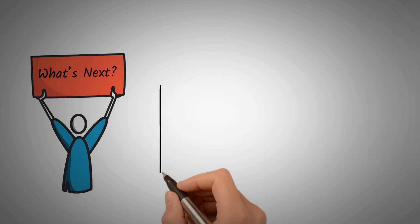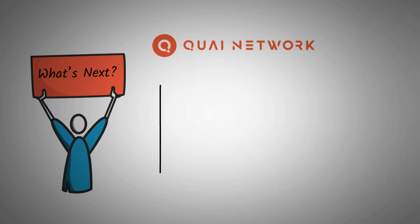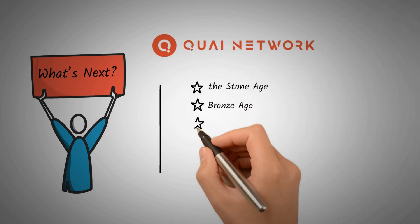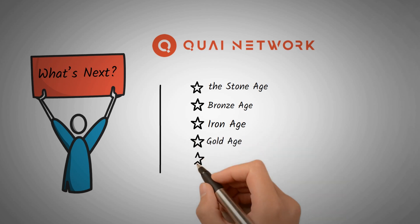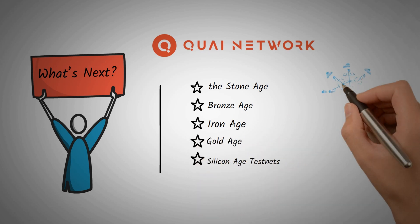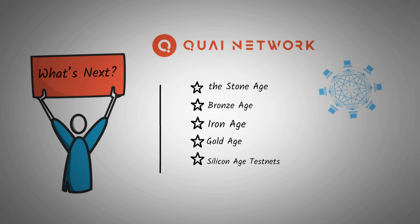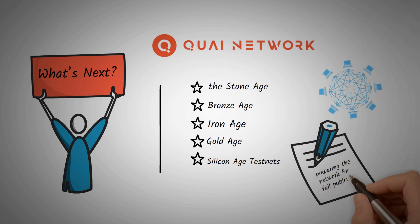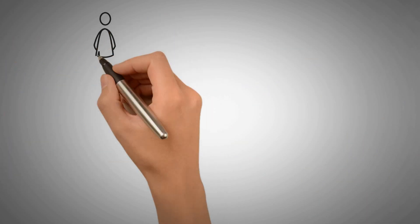What's next? Quai Network has planned five testnets in the lead-up to mainnet launch: the Stone Age, Bronze Age, Iron Age, Gold Age, and Silicon Age testnets. Each of these testnets will focus on different aspects of development, preparing the network for full public use.